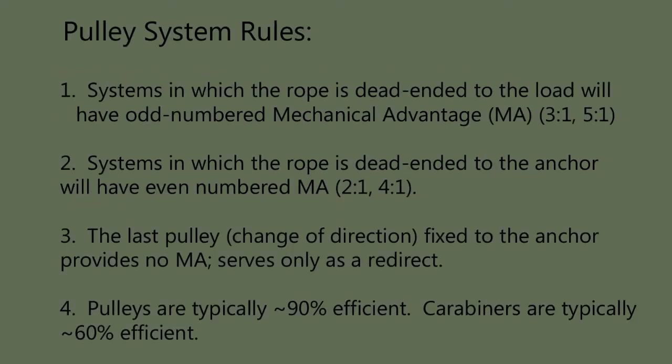Some basic rules and guidelines. Number one: systems in which the rope is dead-ended to the load will have an odd-numbered mechanical advantage, such as 3:1, 5:1, 7:1, 9:1, etc. Number two: systems in which the rope is dead-ended to the anchor will have an even-numbered mechanical advantage — 2:1, 4:1, 6:1, etc. Number three: the last pulley or change of direction fixed to the anchor will not provide a mechanical advantage; it serves only as a redirect. Number four: pulleys are typically around 90% efficient and carabiners are typically around 60% efficient, so you want to use pulleys whenever you can versus carabiners.